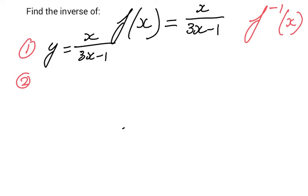And then your second step when you're finding the inverse of a particular function is that you swap x and y. What do I mean with that? Well, the y then becomes an x, and wherever it says x it becomes a y, so x equals y over 3y minus 1.